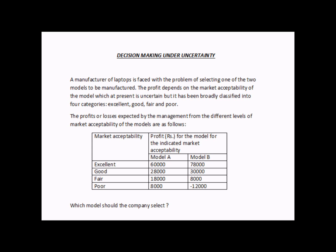If the market acceptability is excellent, model A can generate a profit of 60,000 rupees while model B can generate 78,000 rupees. If the market acceptability is good, model A generates 28,000 rupees while model B generates 30,000 rupees. The question is: which model should the company select? The probabilities of market acceptability have not been provided, which makes this a case of decision making under uncertainty.